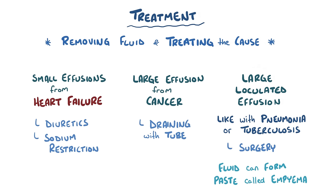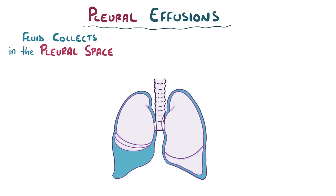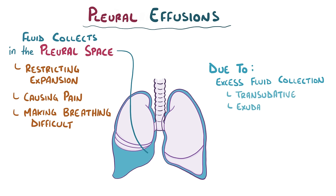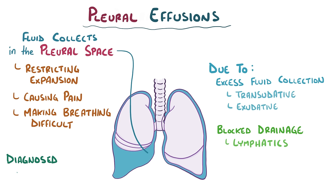As a quick recap, a pleural effusion is when fluid collects in the pleural space around the lungs, restricting expansion and causing pain and difficulty breathing. Pleural effusions can be due to excess fluid collection — either transudative or exudative — or due to blockage of lymphatic drainage. Diagnosis is usually done with a thoracentesis, which can help alleviate symptoms and can be used to identify the underlying cause.